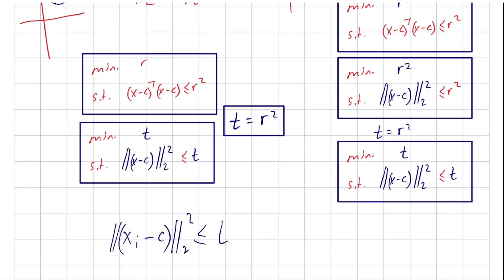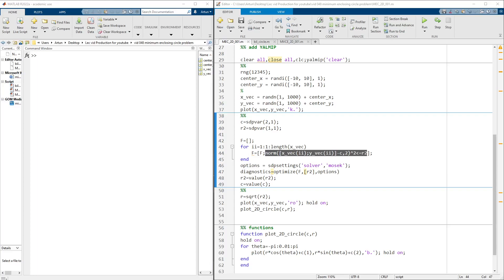I called it r2. This is the constraint that we are imposing. Let's go back to MATLAB. Here, x_i minus c, norm squared, less than or equal to r2 or t. We are employing Mosek as our SDP solver and we are trying to minimize t or r squared, then recovering them in double format.